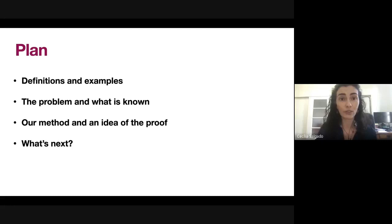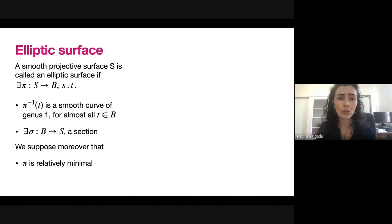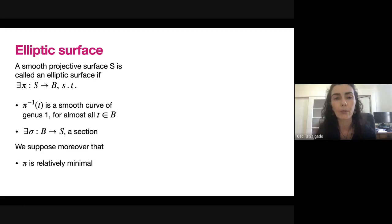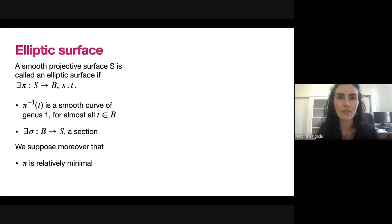Let's start with the main definition: an elliptic surface. I take a smooth projective surface and say it's an elliptic surface if I have a flat morphism from that surface to some curve B such that the fibers are smooth curves of genus one for all but finitely many points. I also suppose that I have a section for this fibration — necessary for talking about rank — and that the fibration π is minimal, meaning no (-1)-curves are contained in the fibers of π.